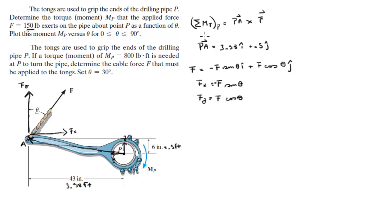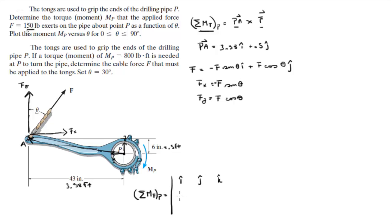Now we do the cross product to find the moment about P that F creates. The moment is given by the cross product of PA and the Cartesian vector form of F, computed using the i, j, k determinant. On the top row put PA: 3.58, 0.5, 0. On the bottom row put the Cartesian vector form of F: negative F sine(theta), F cosine(theta), 0.